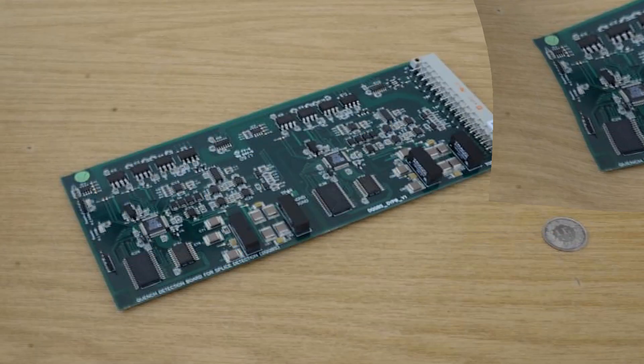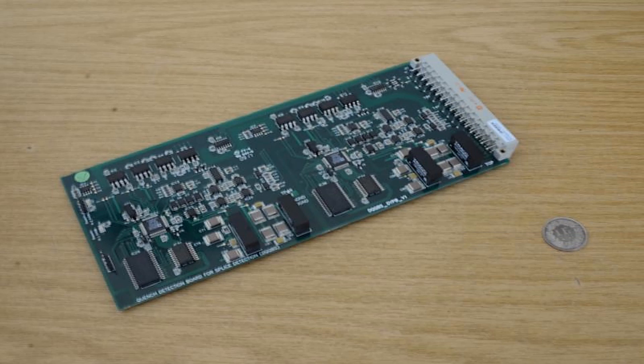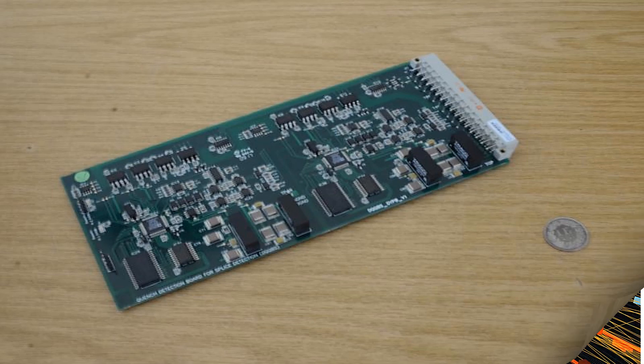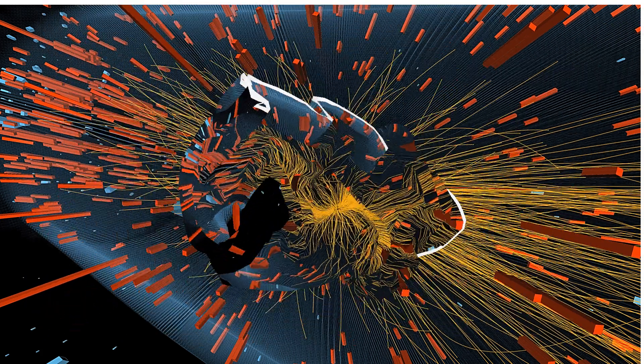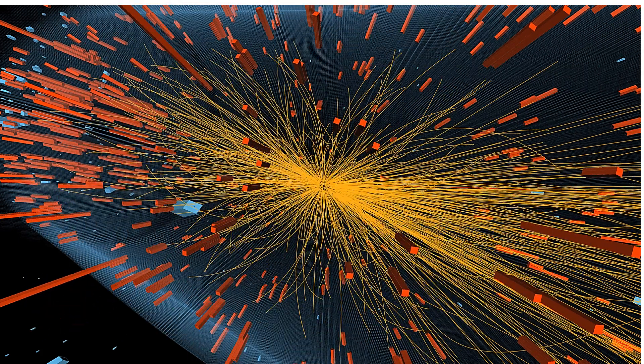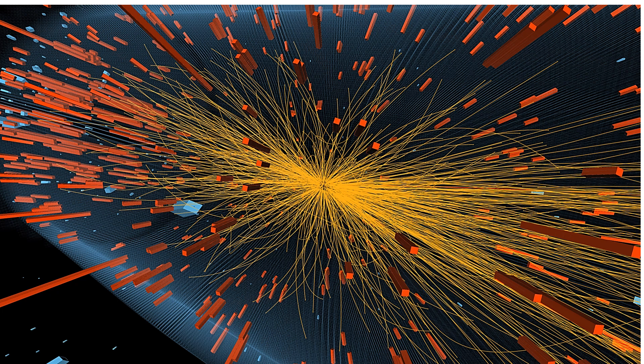When this happens, the current has to be safely extracted in a very short time. Magnet protection in case of quenches is a crucial part of the design of the LHC's magnetic system. And the electronic cards are the eyes and ears of the quench protection system.